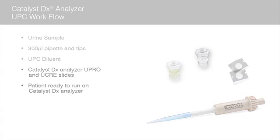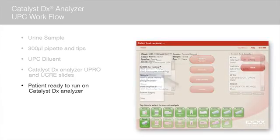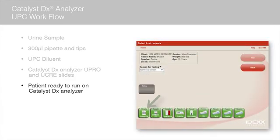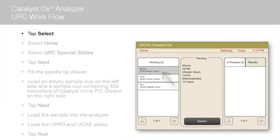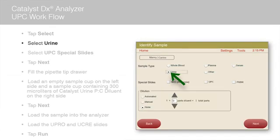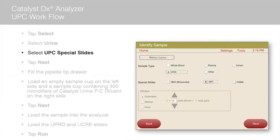For our purposes today, we have already collected the sample and initiated the run on the IVLS. Once the patient's name appears on the pending list on the Catalyst DX home screen, tap the patient name and tap select. Select urine as the sample type. Select the UPC special slides checkbox. When this checkbox is chosen, the automated dilution option is selected automatically. Tap next.